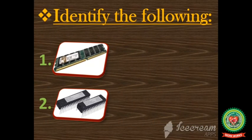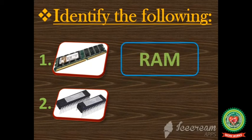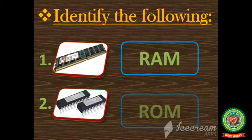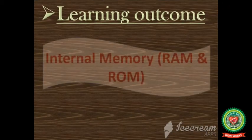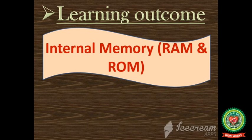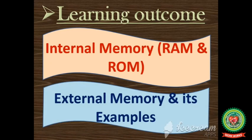Now identify the following icons: the first one is RAM and the second one is ROM. Today we have learnt about internal memory and its types RAM and ROM, their full forms, external memory, and its examples. Do reading of pages 7 and 8 and do revision of the full forms and IDs.